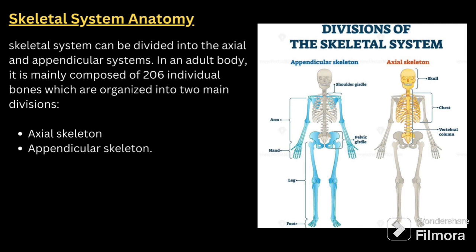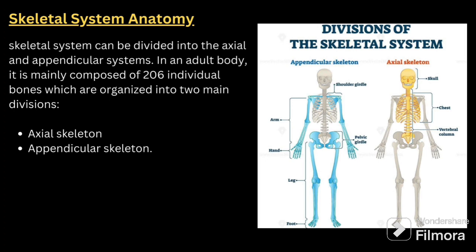The skeletal system can be divided into the axial skeleton and the appendicular skeleton. In the adult body, as mentioned, we have 206 bones organized into these two divisions. In the image provided, the blue color represents the appendicular skeleton and the yellow color represents the axial skeleton. Now we will see what is included in each division.